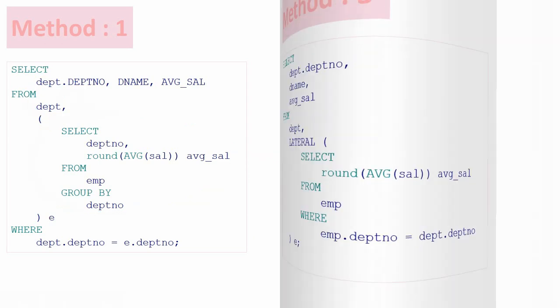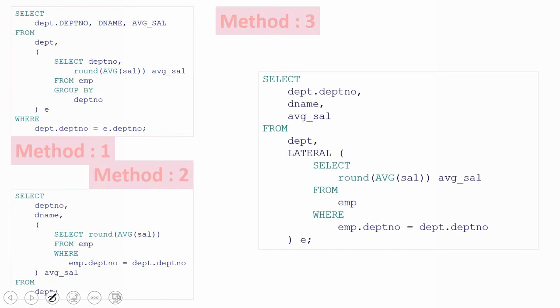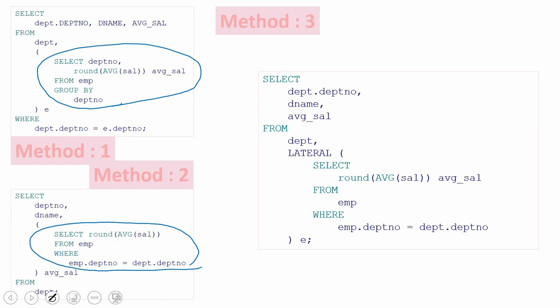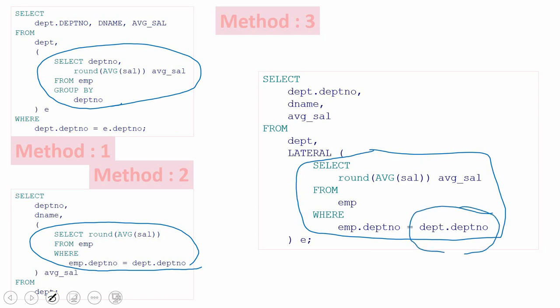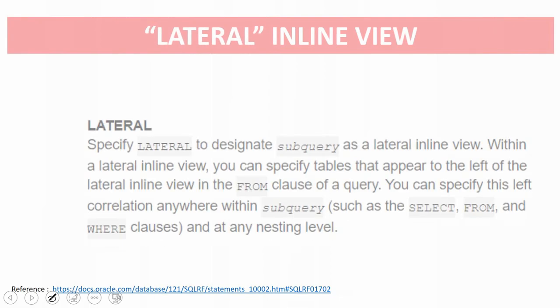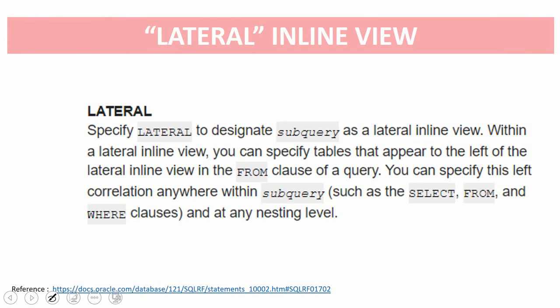So to summarize all three methods: in method one we use an inline view as part of the FROM clause; in method two we use an inline view in the SELECT clause; in method three we use the inline view in the FROM clause, but within the inline view we access the column of the table present on the left side — made possible by specifying the LATERAL keyword. The Oracle documentation states: specify the LATERAL keyword to designate the subquery as a lateral inline view, which allows accessing columns of the left-side table within the subquery.